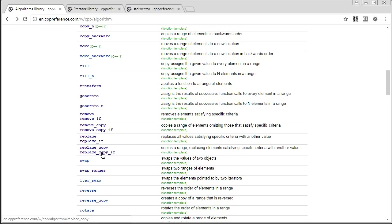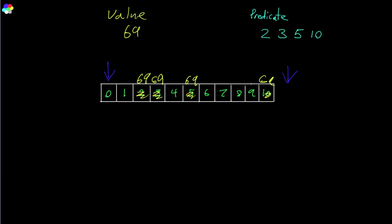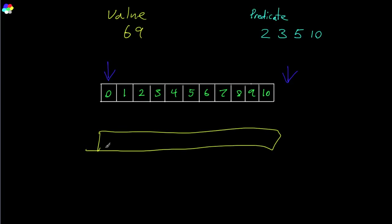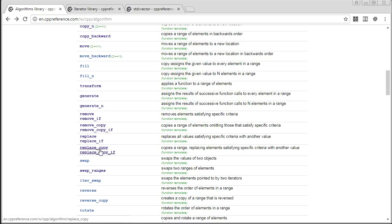replace_copy_if does the same idea but out-of-place: instead of replacing in place, it copies all the values to a destination range, but any that match the predicate get replaced with the value you give it. So if 5 and 10 match, the output would be 4, 69, 6, 7, 8, 9, 69 — that's what replace_copy_if does.